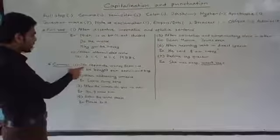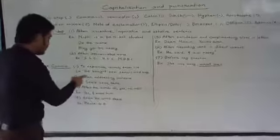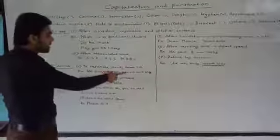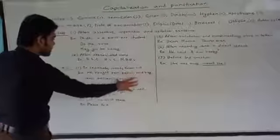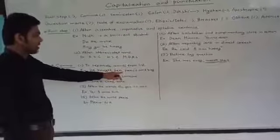And then, comma. Number one. Comma is used to separate words from list. For example, he bought pen, pencil, and book. There are some words, side by side. And we have separated the words using comma. Pen, pencil, and book.